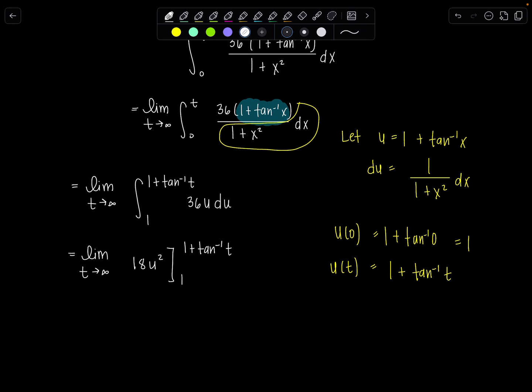This 18, it doesn't need to be included when we evaluate upper limit, lower limit. Get in the habit. If you've got a constant, stay out there constant, right? I'll multiply by 18 at the end. I don't need 18 stressing me out while I work through the rest of the computation. Limit t goes to infinity, 18 times 1 plus tan inverse of t squared minus 1 squared.